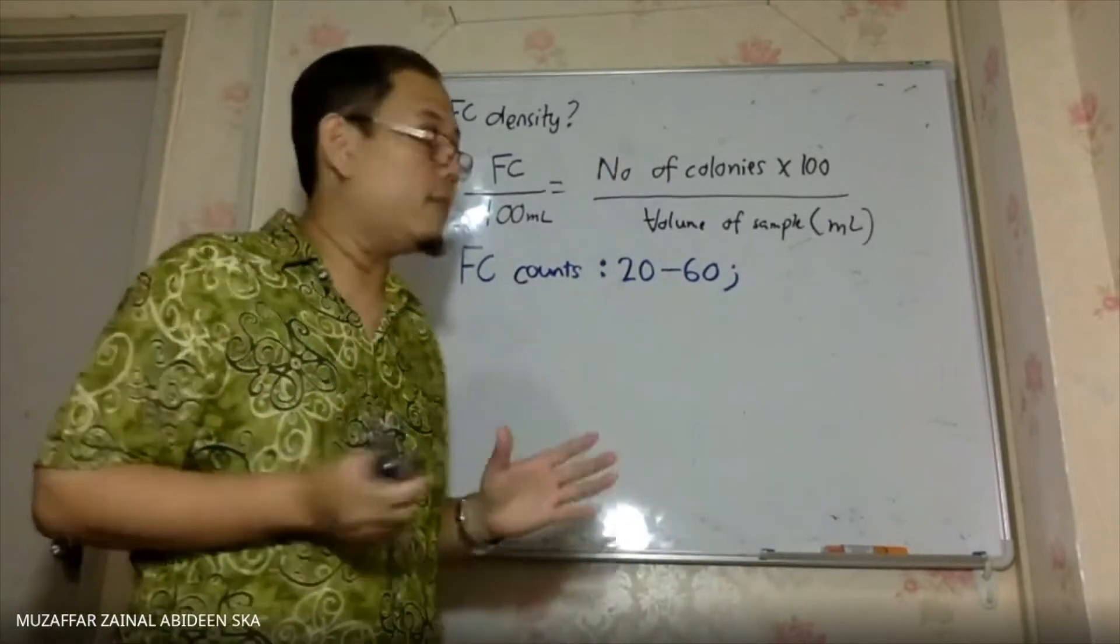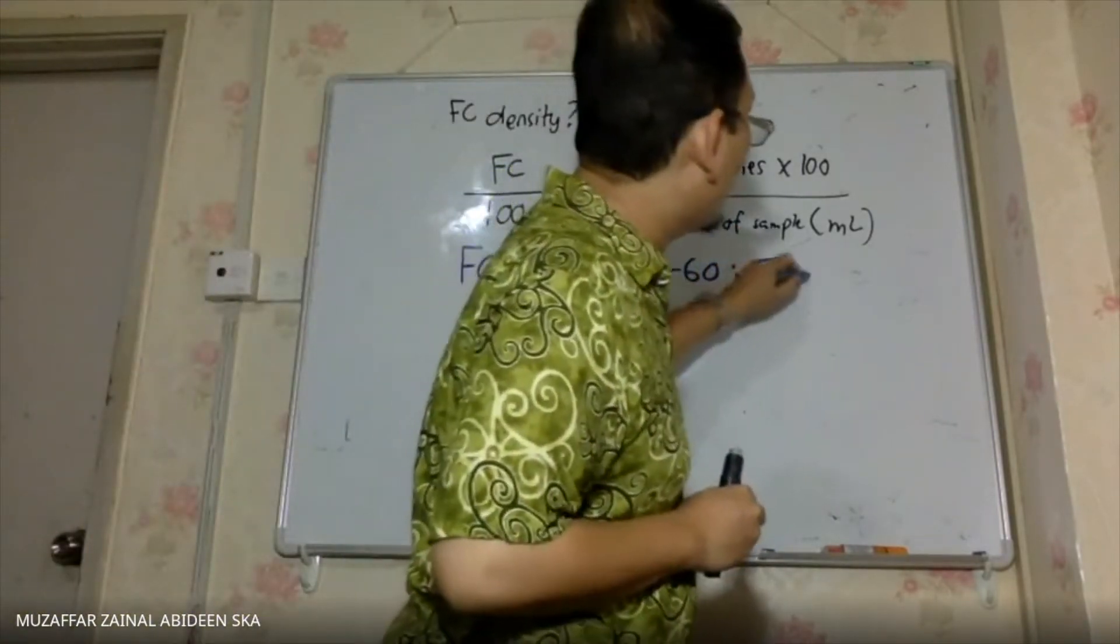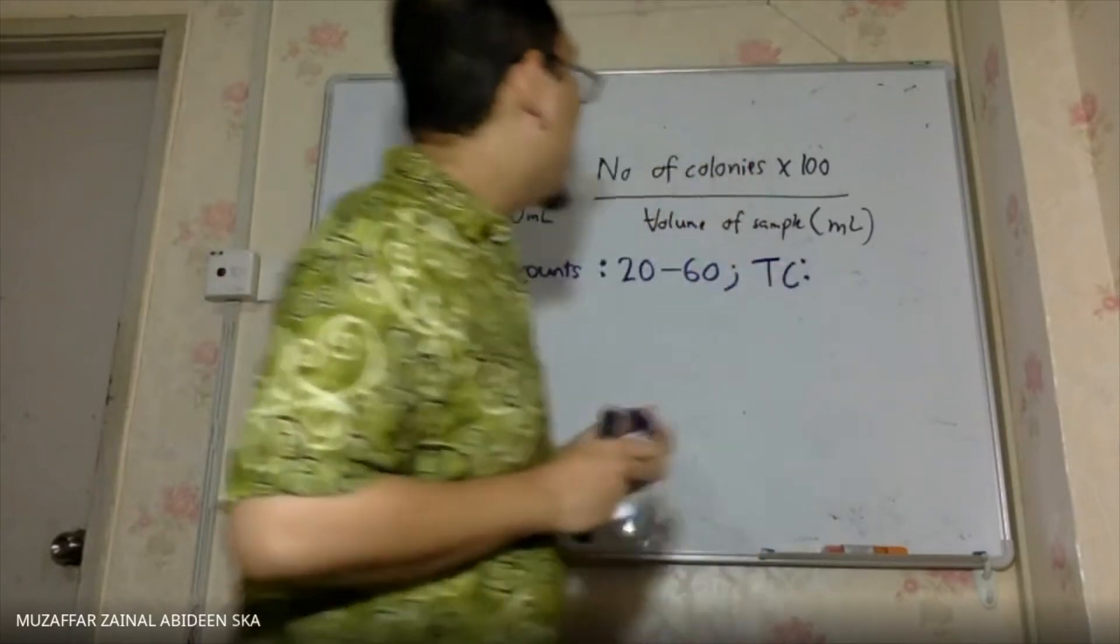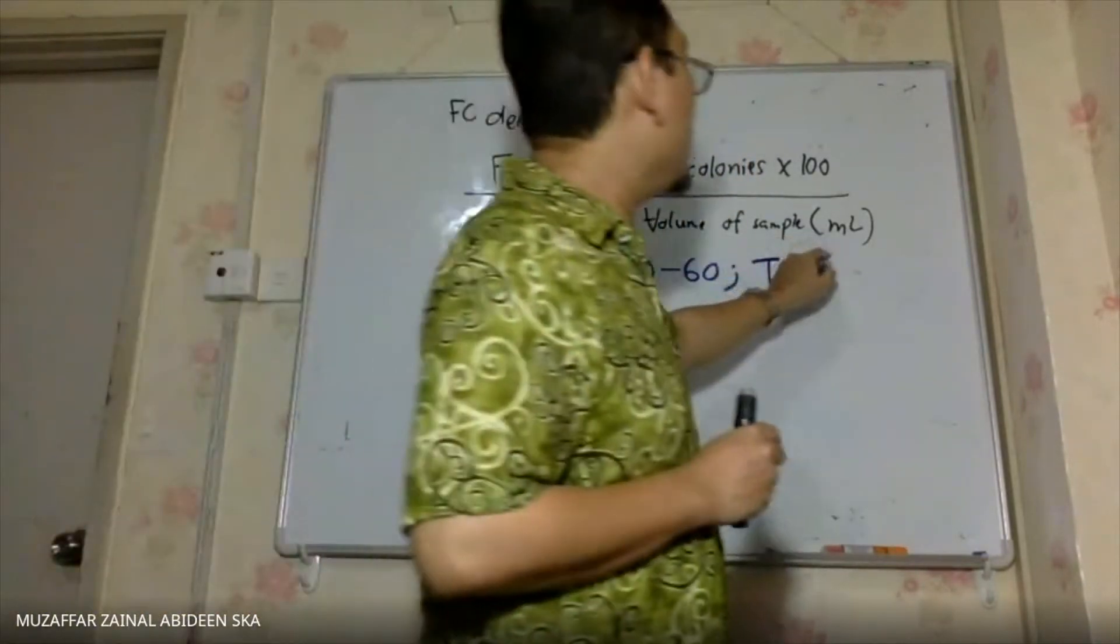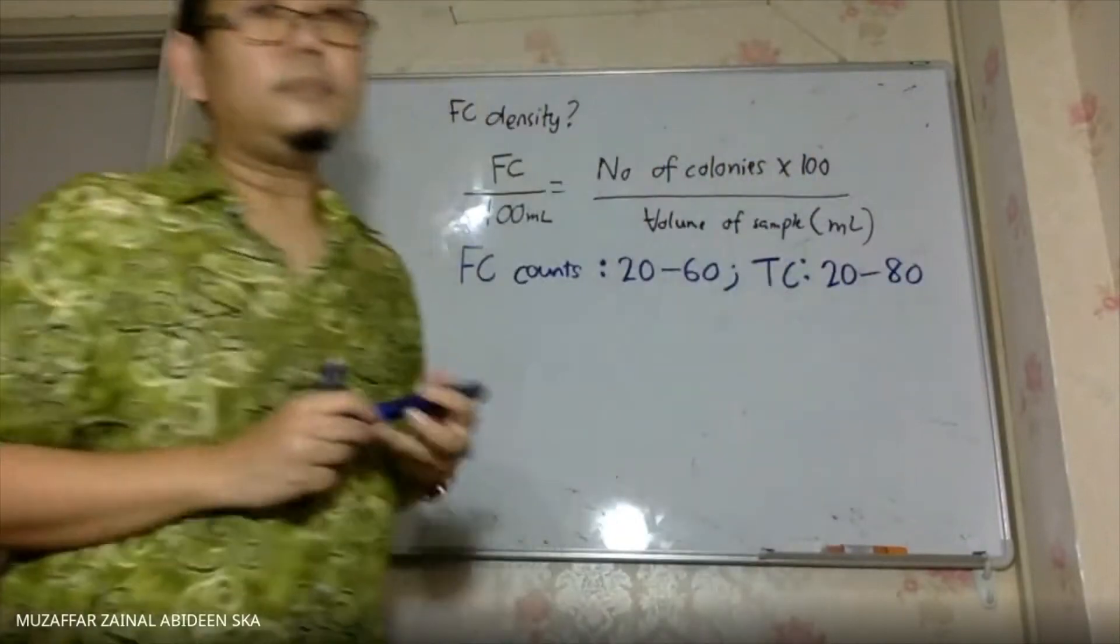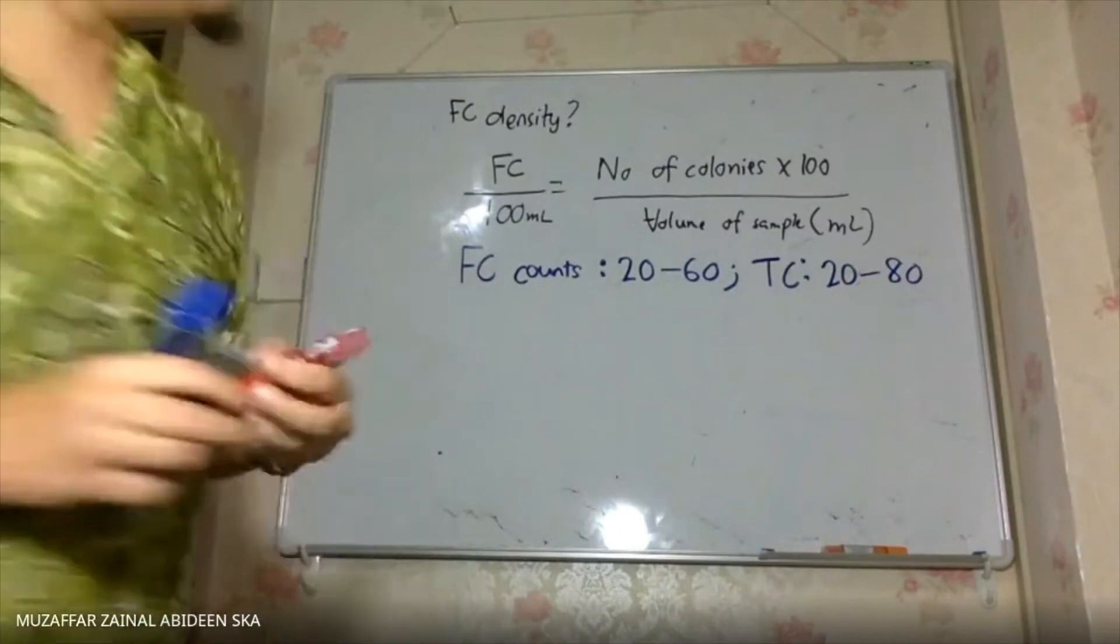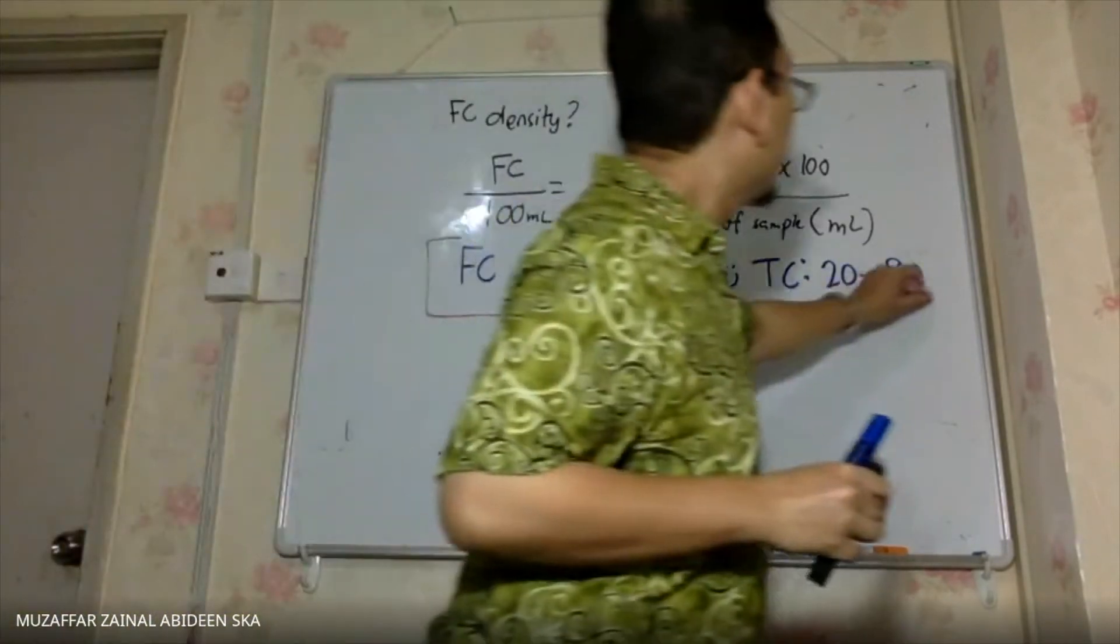If the question asks you on the TC, total coliform, the valid result would be between 20 to 80. So this is something that you need to know.